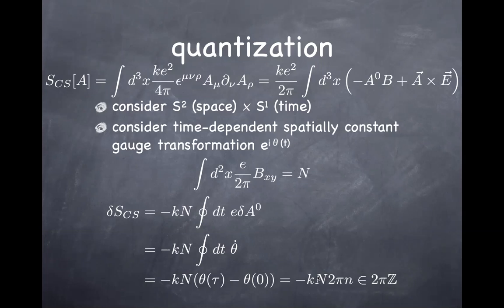Student: Just to be clear — the fact that the B integral has to be N comes from the single-valuedness argument from this morning? That's right. I'm basically using the single-valuedness condition multiple times. The fact that (e/2π) ∫B is an integer has to do with single-valuedness of the gauge transformation on two-dimensional space. On top of that, I use periodic time and require single-valuedness in that direction to obtain the change of the Chern-Simons term. Further, I require that e^(iS) with the Chern-Simons term is single-valued under gauge transformation — so I'm using this single-valuedness argument three times, leading to the quantization condition on the Hall conductivity.